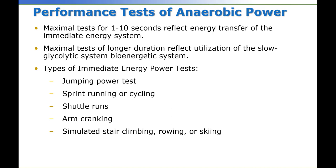A maximal test of one to ten seconds reflects energy transfer to the immediate energy system — ATP and phosphocreatine. Maximal tests of longer duration reflect utilization of the slow glycolytic bioenergetic system. If the activity is more than around twelve seconds, you move into the glycolytic system, which lasts up to about three minutes, and then it switches over to aerobic.